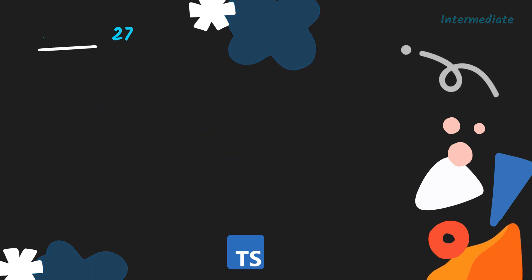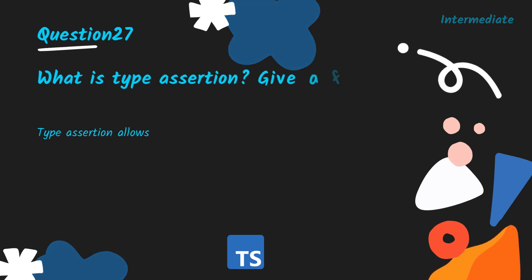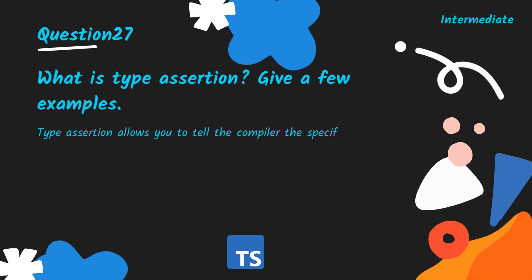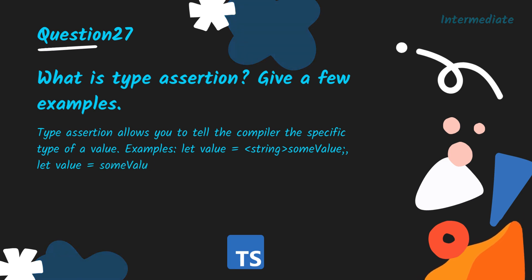What is type assertion? Give a few examples. Type assertion allows you to tell the compiler the specific type of a value. Examples: let value = someValue as string, or using angle-bracket syntax: let value = <string>someValue.